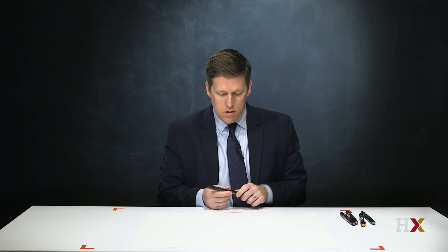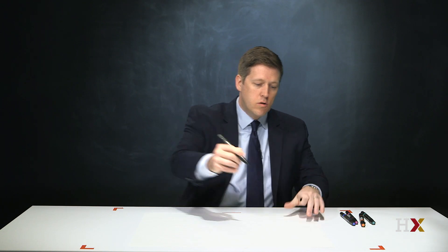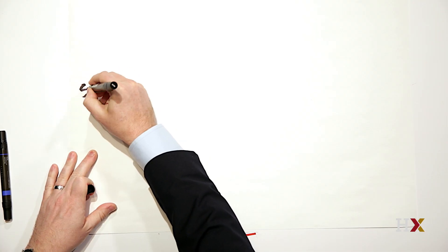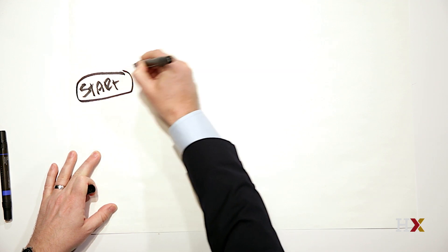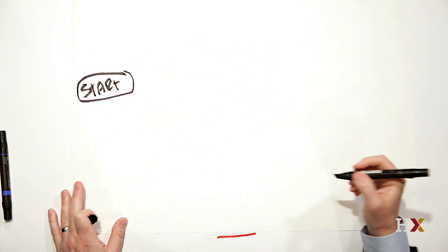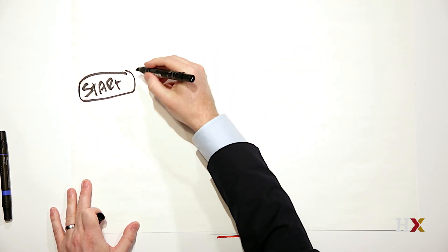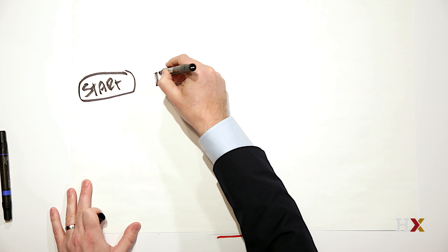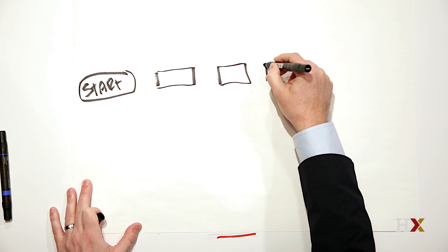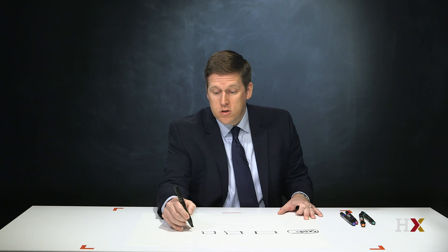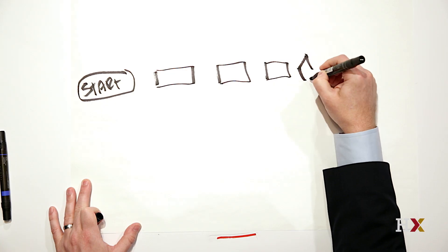So let's take an example here and draw just a simple diagram. Usually every process has a start, and the start and the end often use a shape that looks like a pill. Then you start to ask yourself, what are each of the steps in the process? So we might say here's step one — put a box there — and step two, and step three. And maybe after step three, there's actually a decision that has to be made, so we reflect that by making it a diamond.